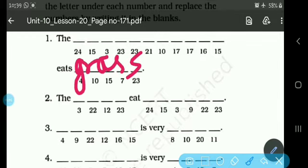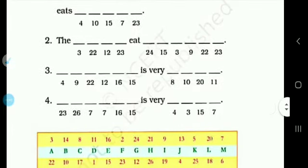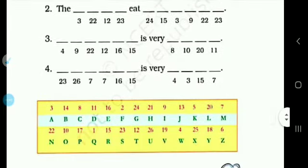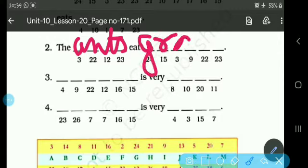The dash eat dash. So see here on page, 3, 2, 2, 3 in A and 22 in ants. So here on page, the ants. Ants eat grains. Here on page, the ants, ants eat grains.